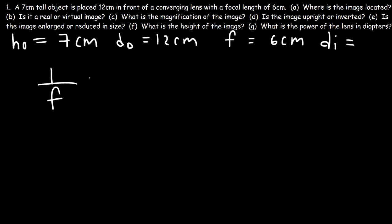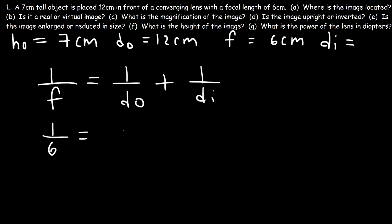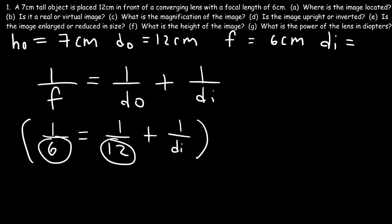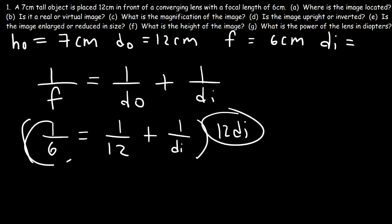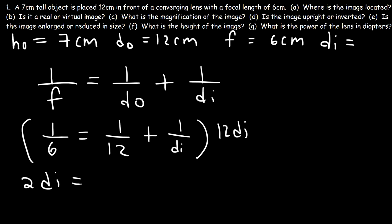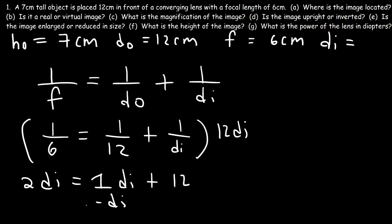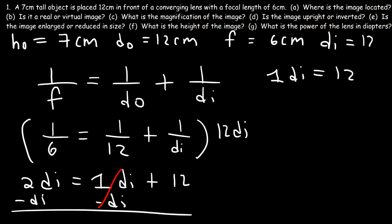Let's use the thin lens equation: 1 over F equals 1 over DO plus 1 over DI. The focal length is 6 centimeters and DO is 12. Multiplying everything by 12 DI to eliminate fractions: 12 DI divided by 6 is 2 DI, 12 DI divided by 12 is 1 DI, and 12 DI divided by DI is 12. Subtracting 1 DI from both sides gives 2 DI minus 1 DI equals DI, so DI equals 12 centimeters.